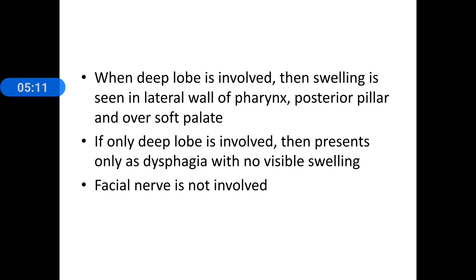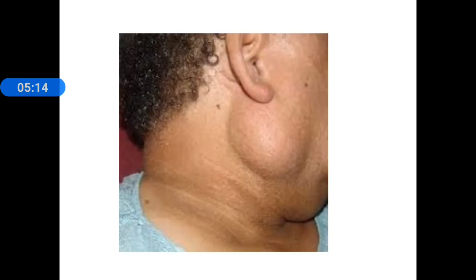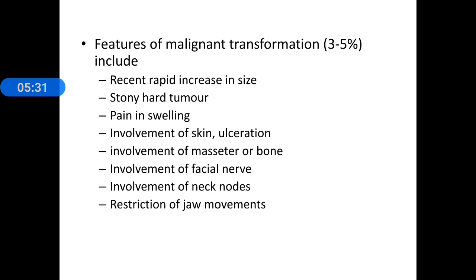Usually the facial nerve is not involved by the tumour. In less than 5% of cases, it can undergo malignant transformation. Signs suggesting this include a recent rapid increase in size, a firm swelling becoming stony hard, pain in the swelling, skin involvement with ulceration, involvement of muscles such as masseter or bone, involvement of the facial nerve, presence of neck nodes, or restriction in jaw movements.